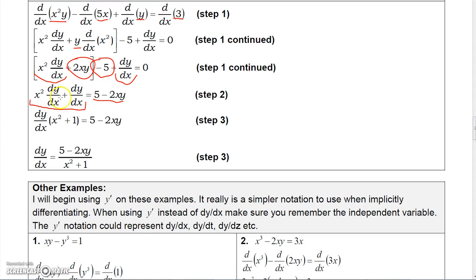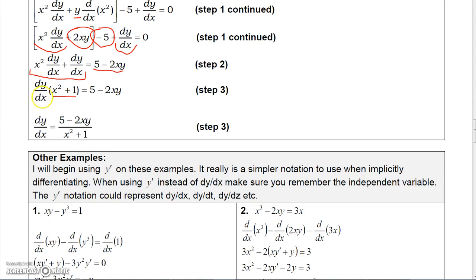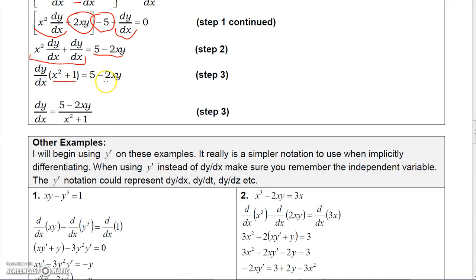Then I factor dy over dx out of the two left-side terms: dy/dx times (x squared plus 1) equals 5 minus 2xy. Finally, dividing both sides by x squared plus 1, I get dy over dx equals (5 minus 2xy) over (x squared plus 1). And that's how we implicitly differentiate a function. Notice the derivative is written in terms of both x and y, and we assume we can't solve for y explicitly, so we leave it this way.